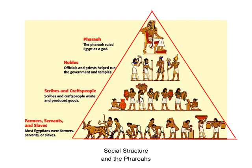The other classes: the nobles are made up of priests and other officials that helped run the government. Scribes and craftspeople were educated in how to do their particular jobs. And of course the farmers, servants, and slaves — which all societies run upon — were very important for providing food, basic services, and they were responsible for helping to build things like the pyramids.